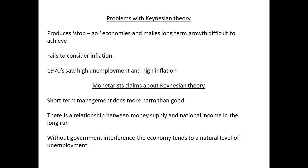There are two immediate points to note about Keynes' theory. The first is that it tends to produce stop-go economies, so long-term planning and growth become harder to achieve. The second is that it fails to really consider inflation — the 1970s saw both high unemployment and high inflation at the same time. Several alternative theories criticise Keynes' theory. Among them are monetarists, who argue that short-term management does more harm than good, that there is a relationship between money supply and income over the long term, and that there is a natural level of unemployment which would be found without any government intervention.